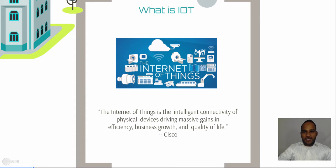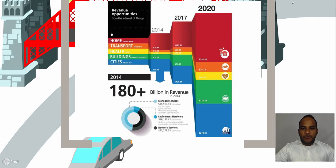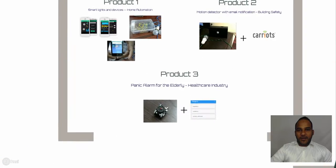Let's take a look at the market opportunity. The home automation market is one of the big chunks — by 2020 we're looking at almost four hundred billion dollars. Buildings are at about two hundred ten billion dollars and cities at about two hundred seventy billion dollars. That is a huge opportunity for entrepreneurs and businesses to create new products and services.